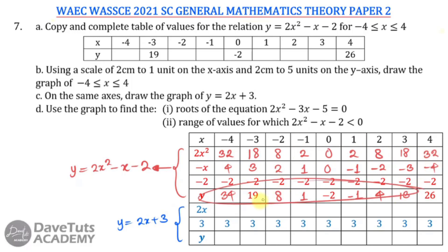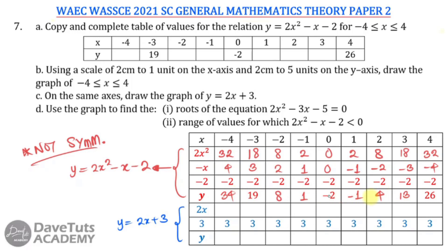Looking at the y values we calculated, one thing to note is that they are not symmetrical. Normally with a quadratic, the values to the left and right of the turning point mirror each other. The fact that they don't here means the turning point is not included in this range of x values, so students should note this when plotting their points on the graph.